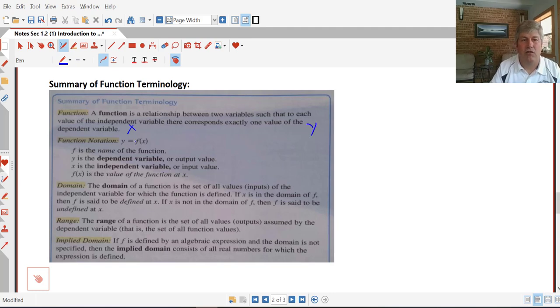Using our function notation, y is f of x. F is the name of the function. We can call these g of x, then the name is g, or h of x, then the function's name is h. Y is the dependent variable or the output. X is our independent and the input. And f of x is the value of the function at x.